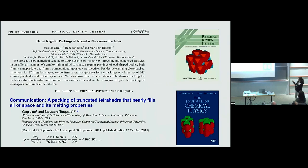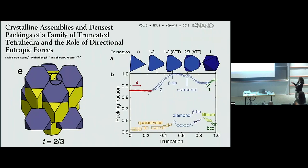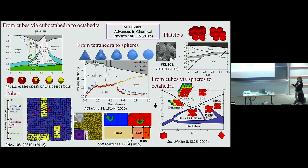Truncated tetrahedra form dimers; this is a centrosymmetric object and they form a Bravais lattice, which was published on the cover of Physical Review Letters. Later work showed that the packing of truncated tetrahedra nearly fills all space — 207 over 208, so 99.5% of the space is filled. This was on the cover of JCP. The Glotzer group also looked at these truncated tetrahedra, mapping out the phase diagram as a function of truncation, finding very exotic crystal structures, all driven by entropy alone. By predicting all these candidate crystal structures and densest packings, you can calculate the equation of state, the free energies, perform common tangent constructions, and map out the phase diagram.